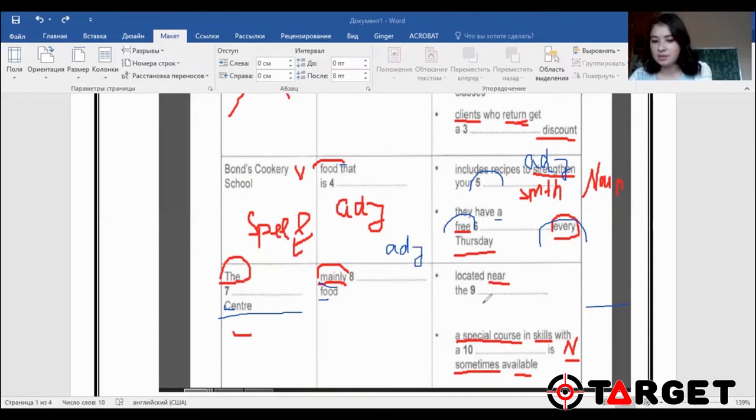And the last question is special course in skills with something. It's going to be a noun. Sometimes available. So I underlined special course, skills, sometimes available because these underlined words may be paraphrased.